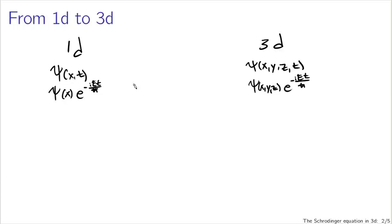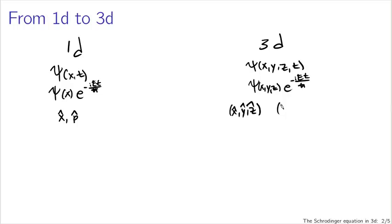The operators that will appear in the Schrödinger equation — for instance, in one dimension we had the position operator x-hat and the momentum operator p-hat — x-hat and p-hat in three dimensions are going to be vector operators. So instead of just having x-hat, I'll have x-hat, y-hat, and z-hat in a vector. Or p-x-hat, p-y-hat, and p-z-hat in a vector.